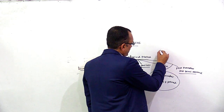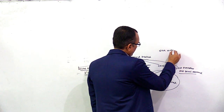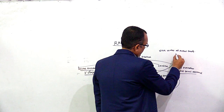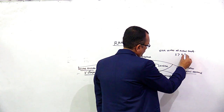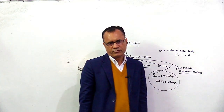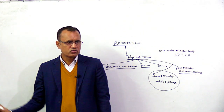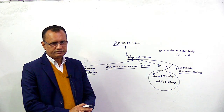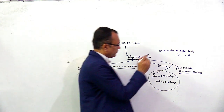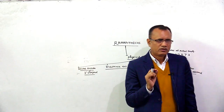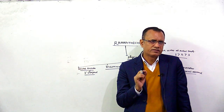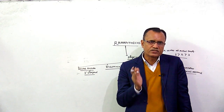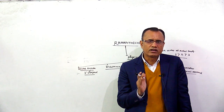Next, the size order of molar teeth was 1 > 2 > 3, meaning the first molar tooth is larger and the third molar tooth is smaller. This is a human-like feature.